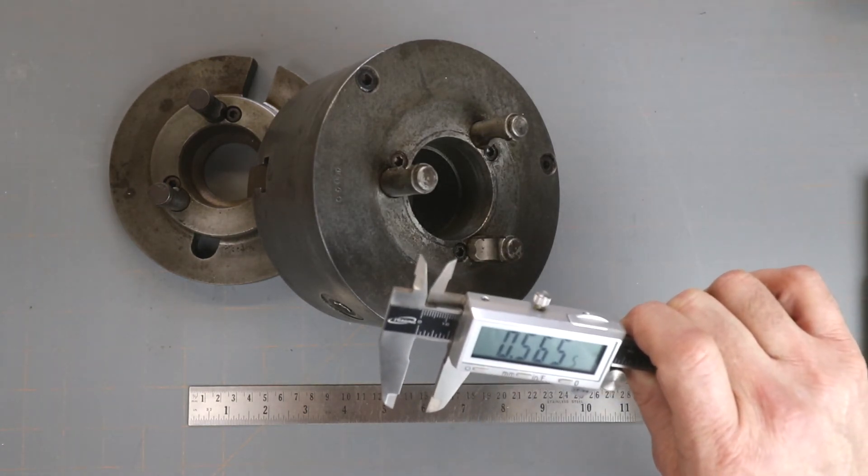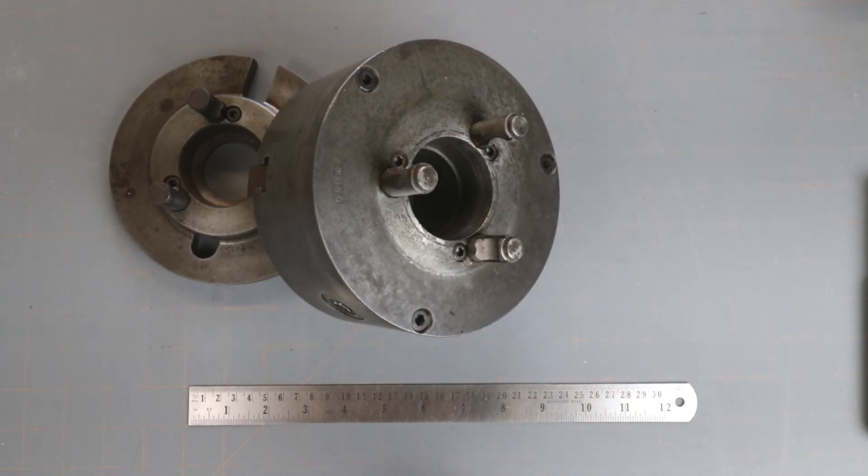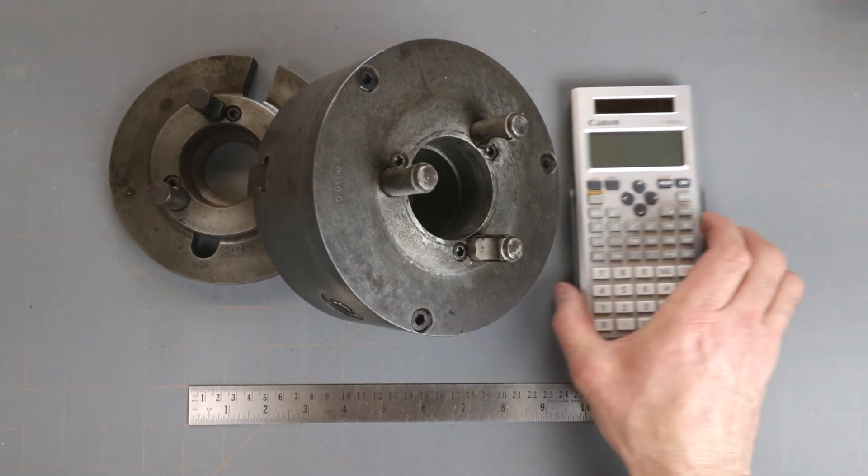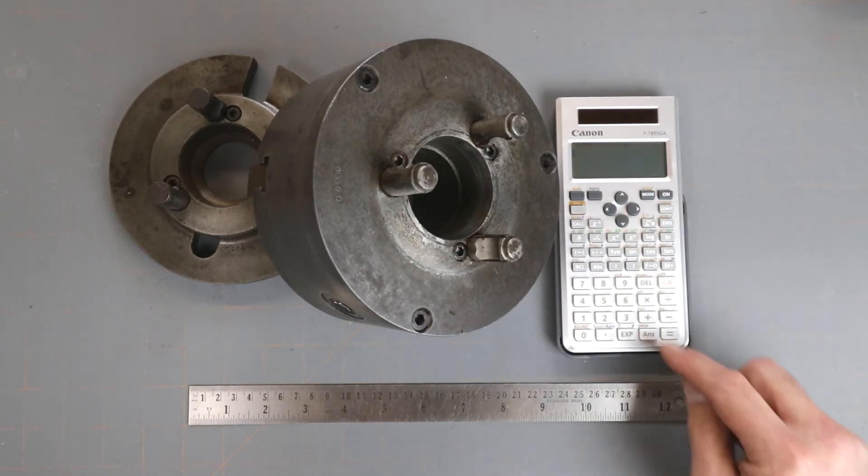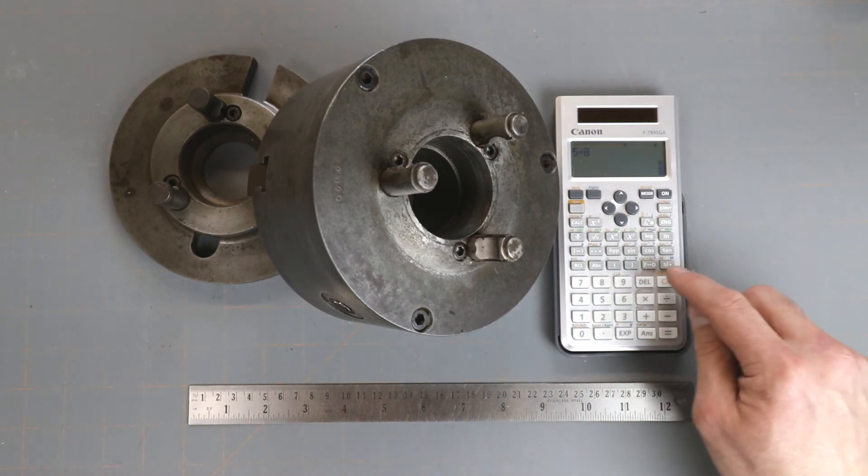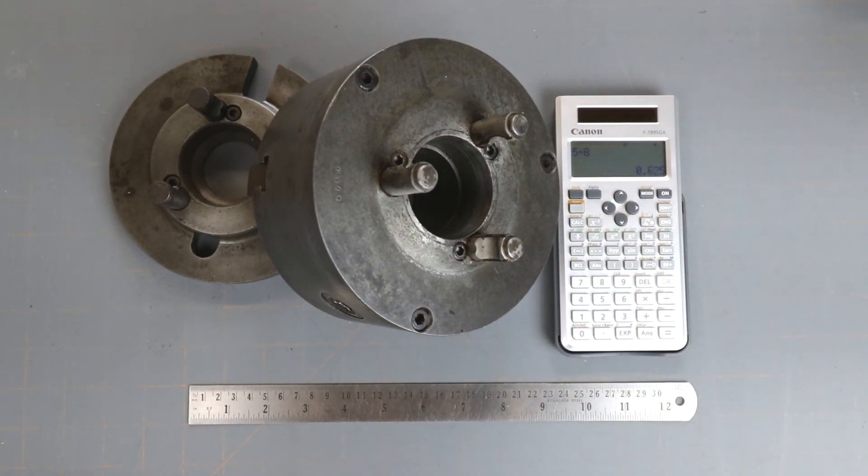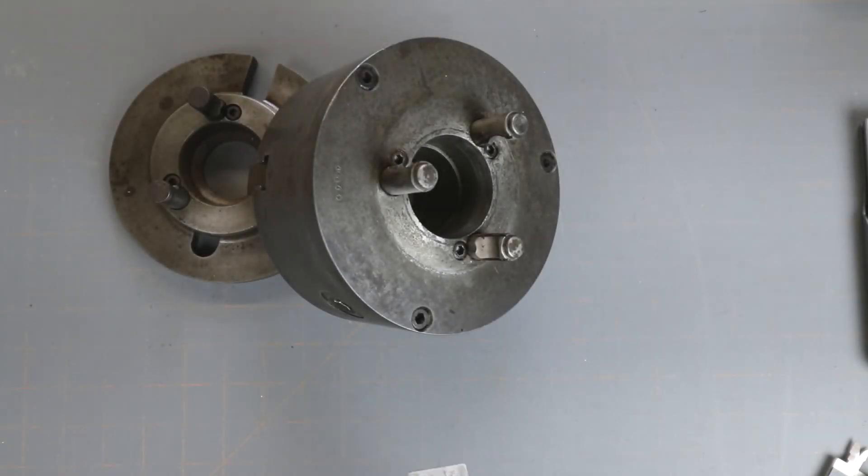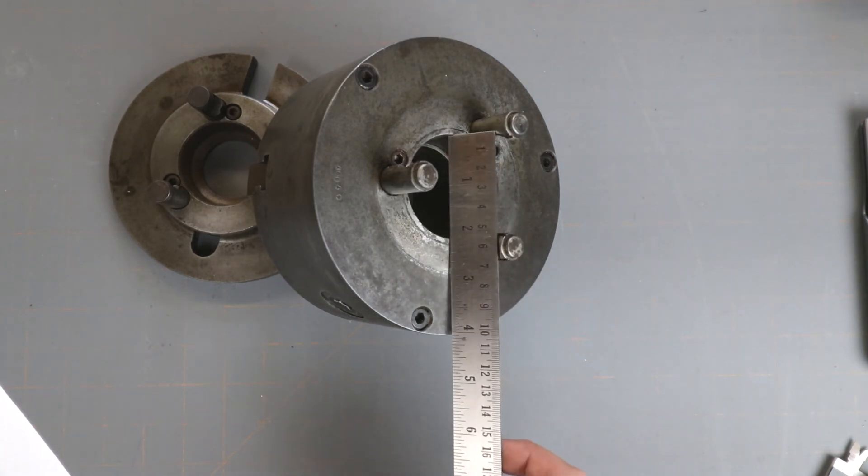For the D1-4, it would be 5/8 or 625 thousandths. We can also measure the hole in the center. For D1-3, we're looking at around 2 and 1/8 inches.